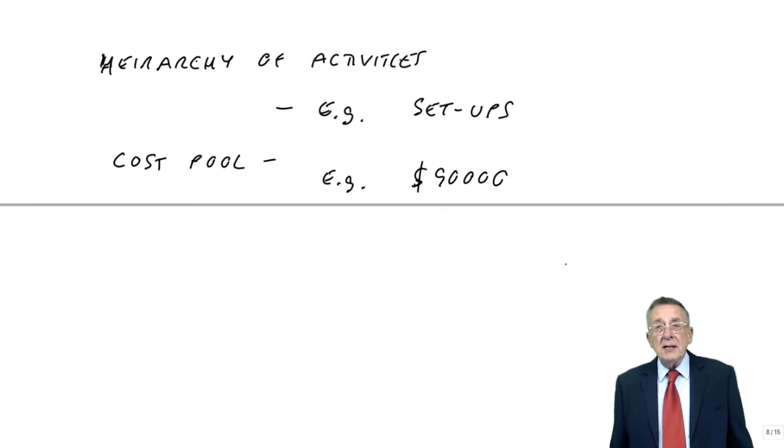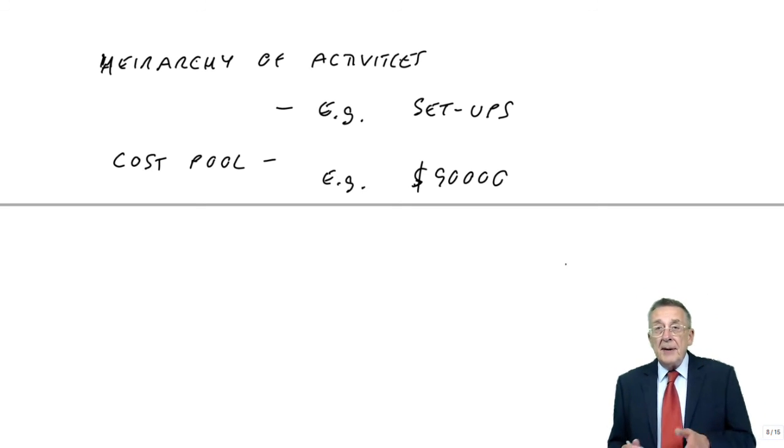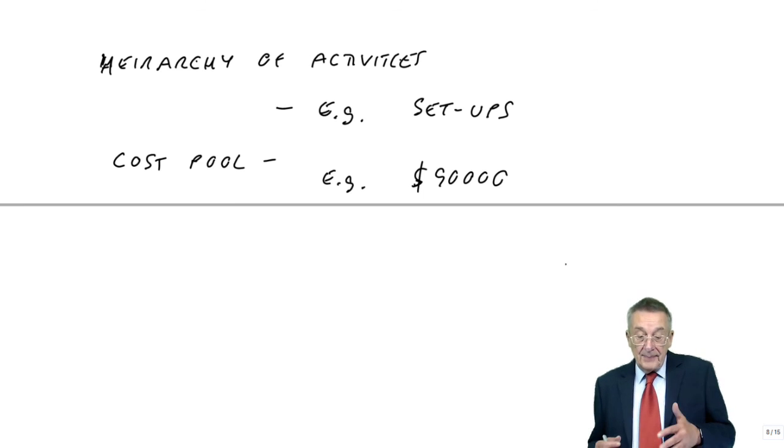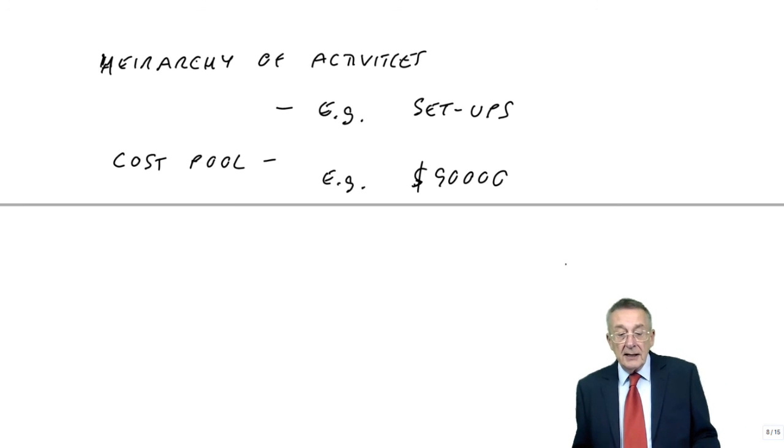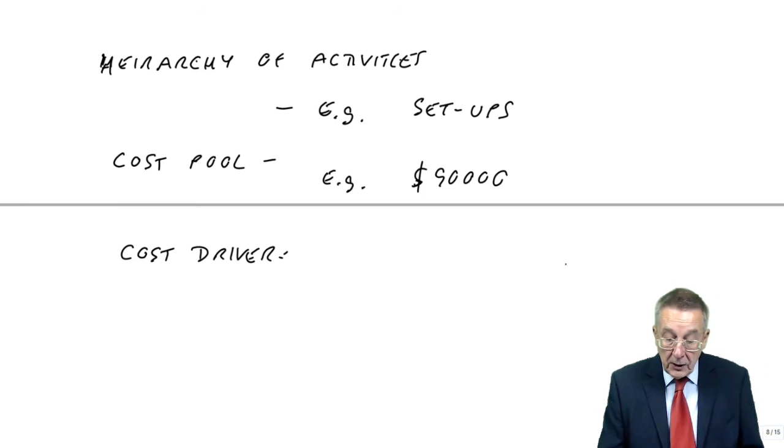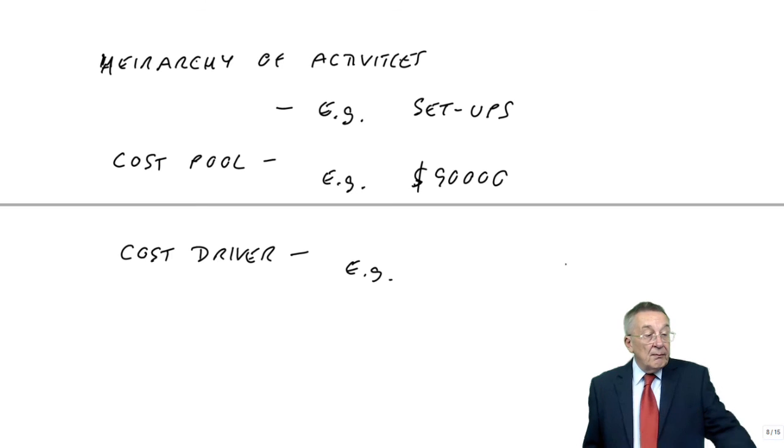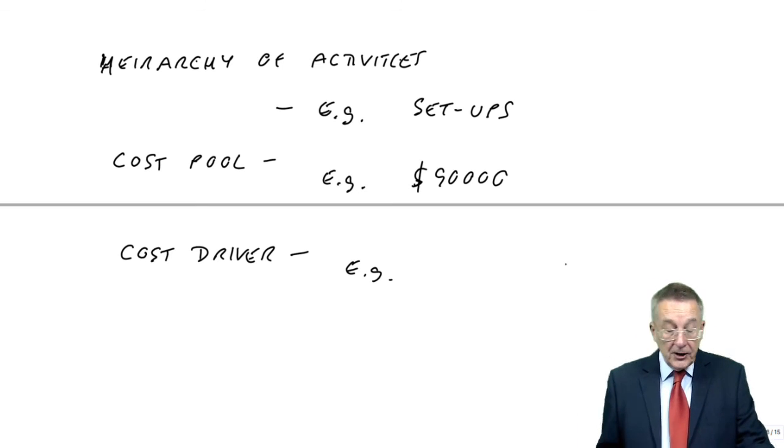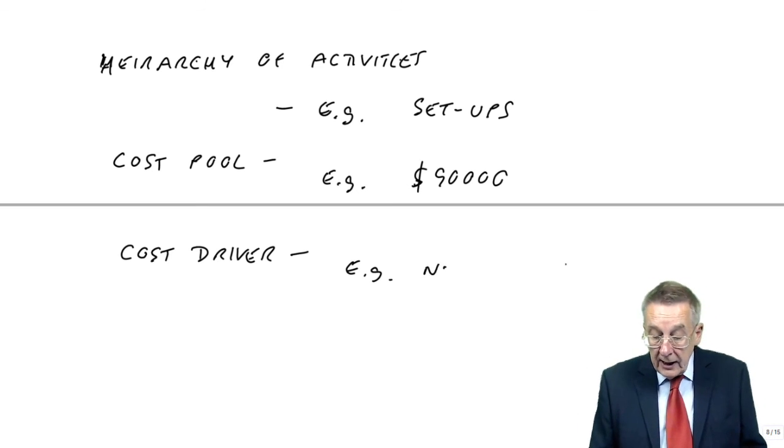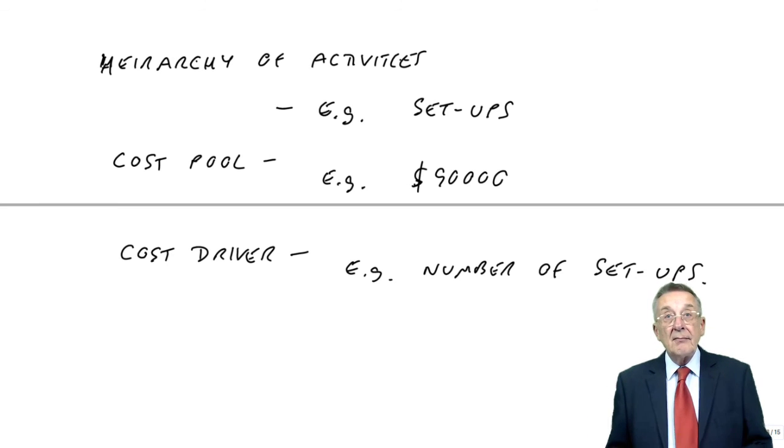And then, finally, of course, in order to get, ultimately, cost for each product and then the unit, we had to determine what causes that cost to be incurred. Well, whatever caused it is the cost driver, which is probably already obvious because the word was used in the question, but the cost driver, well, the setups, the cost pool was 90, the cost driver was number of setups. And there we are.